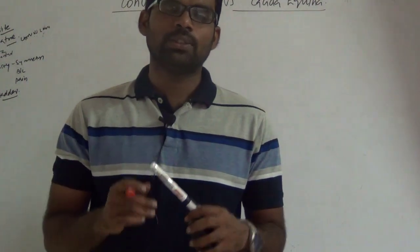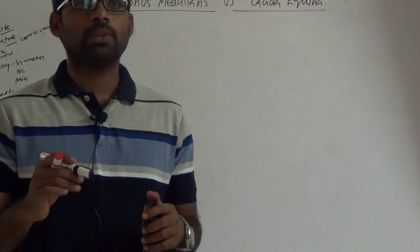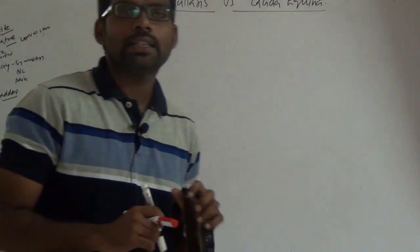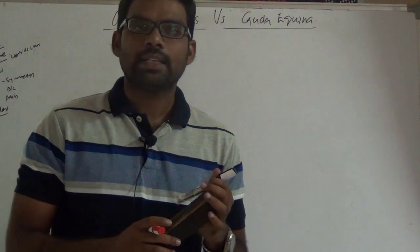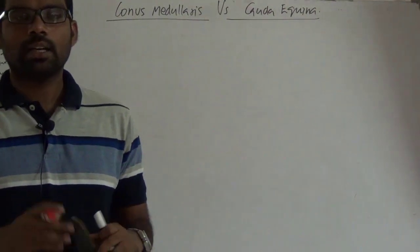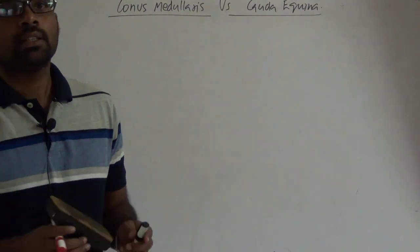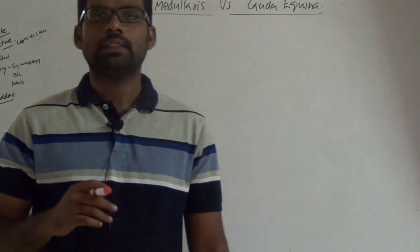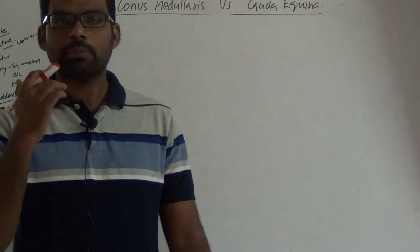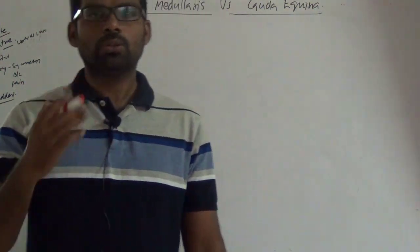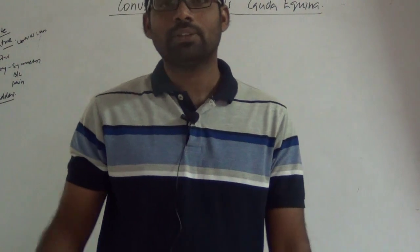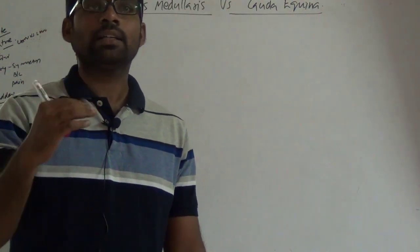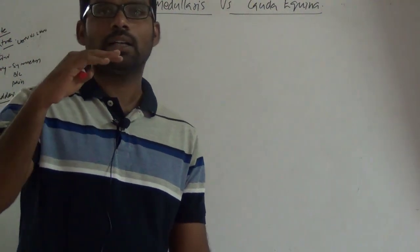Hi friends. In this video we are going to discuss the differences between conus medullaris and cauda equina. To understand this, you need to know what cauda equina and conus medullaris are. Looking at the spinal cord, it extends from the foramen magnum but does not go all the way to the level of the sacrum — it ends at or above the level of L1 or L2.